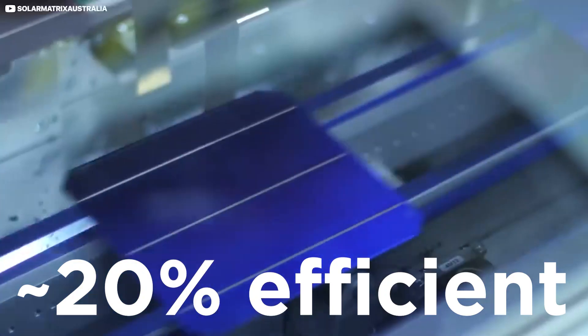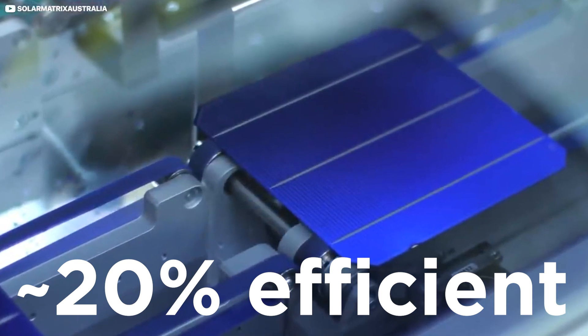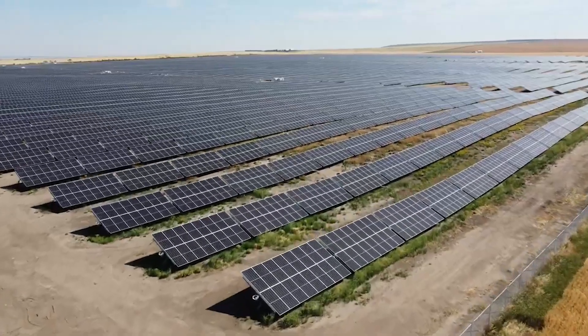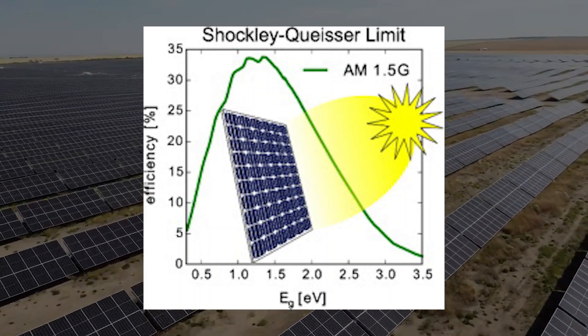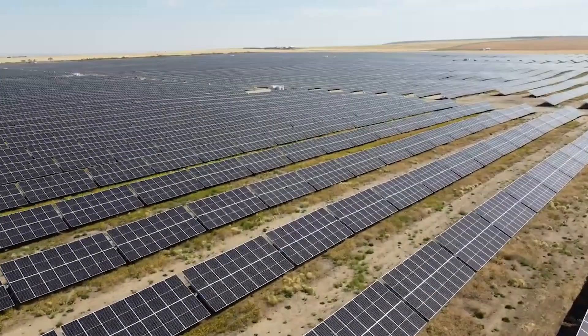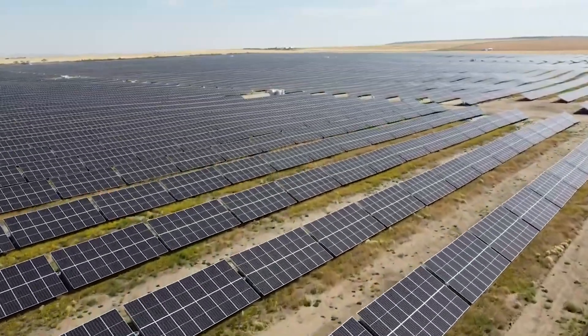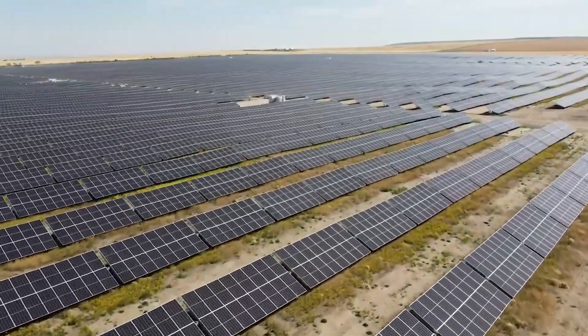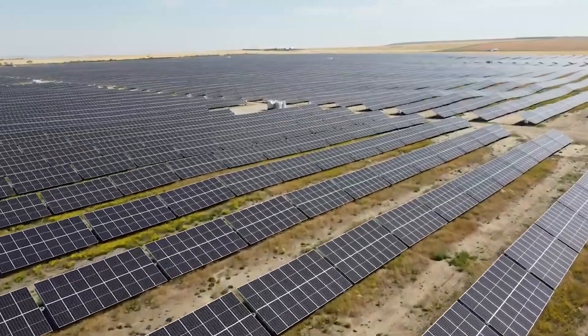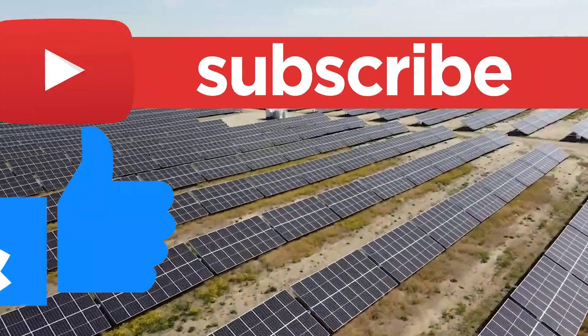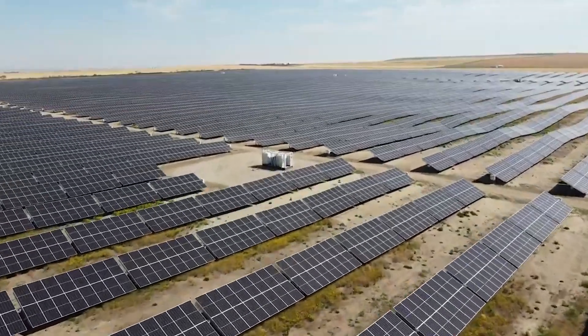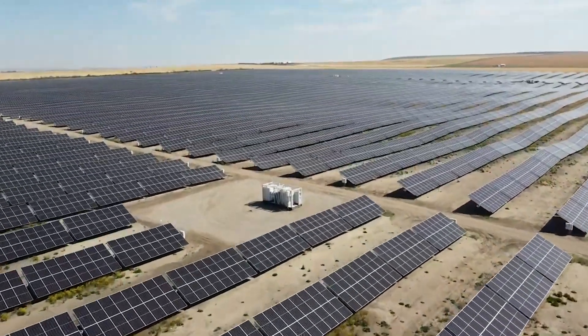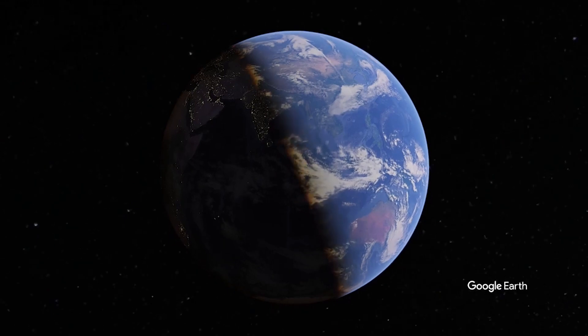Single-junction solar cells are subject to a theoretical efficiency limitation called the Shockley-Queisser limit. This limit would apply for both Earth-based and space-based solar power. However, there are several factors which affect the amount of input to the panels which will differ for Earth-based and space-based solar panels and which will help determine the efficiency required for beaming solar power to Earth. These factors are the number of peak sunlight hours and the intensity of sunlight.